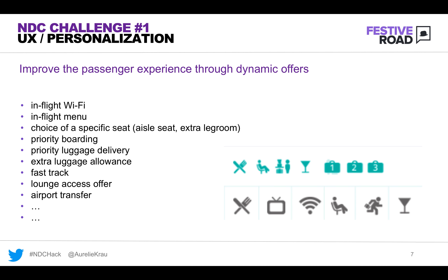Concretely, ancillary services are, for example, in-flight wi-fi, in-flight menu that you can pre-order before your flight, the choice of a specific seat — it can be an aisle seat, extra leg room — services like priority boarding, priority luggage delivery, extra luggage, lounge access, fast track to speed up the time spent at security at the airport, or even services like airport transfer or duty-free. You may have also seen or heard about new aircrafts being acquired by airlines and new configurations on board, brand new seats available. Such services actually influence the passenger experience and there is the opportunity to make the exact same flight unique to every passenger.